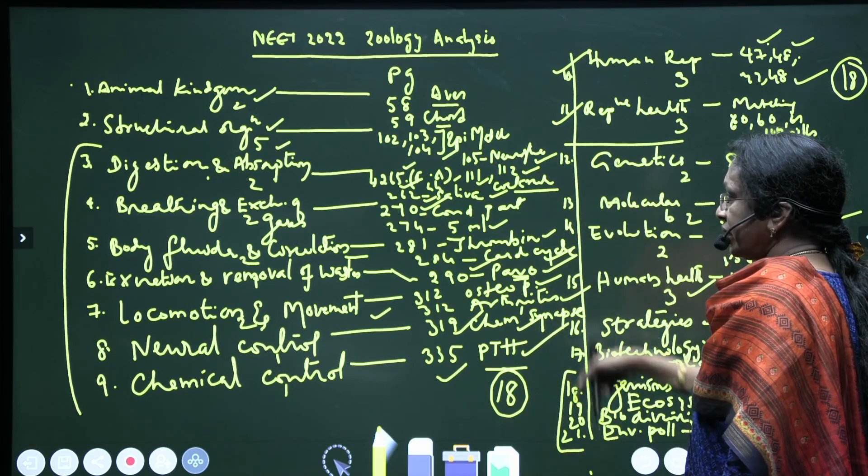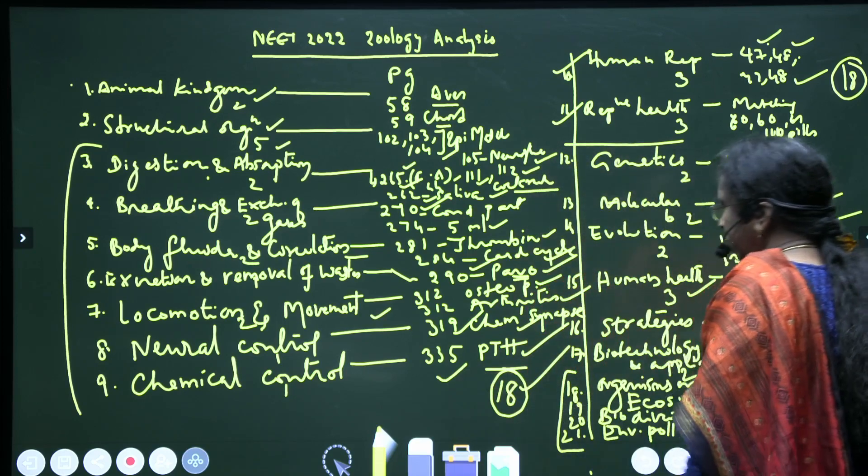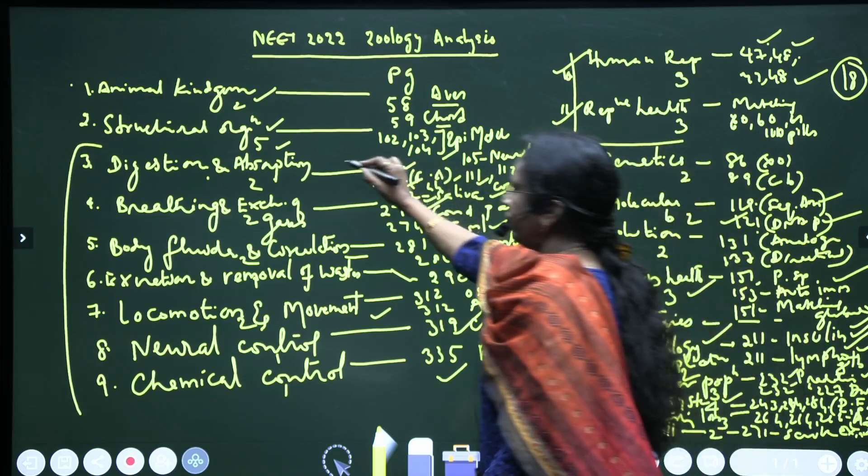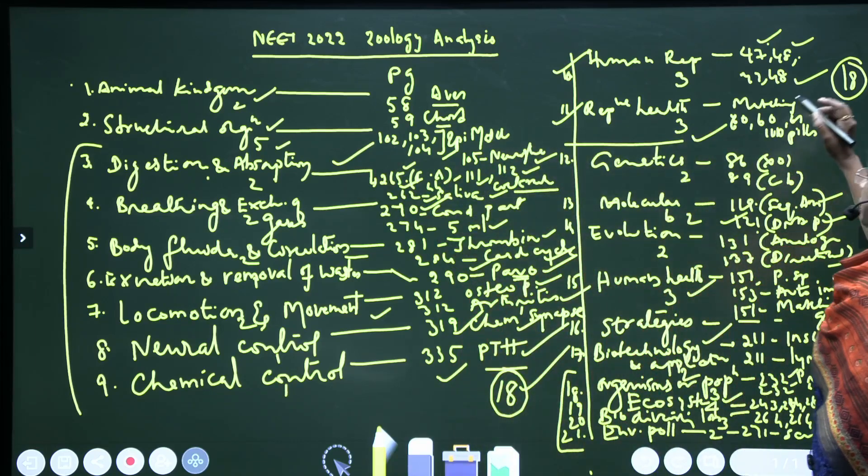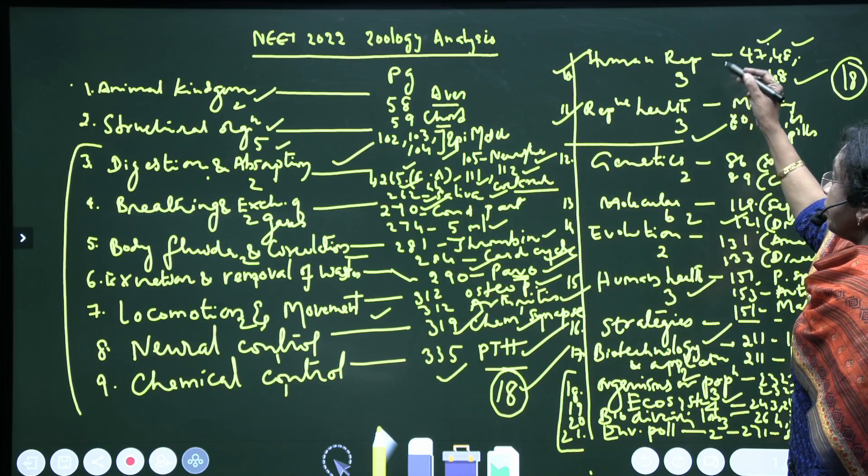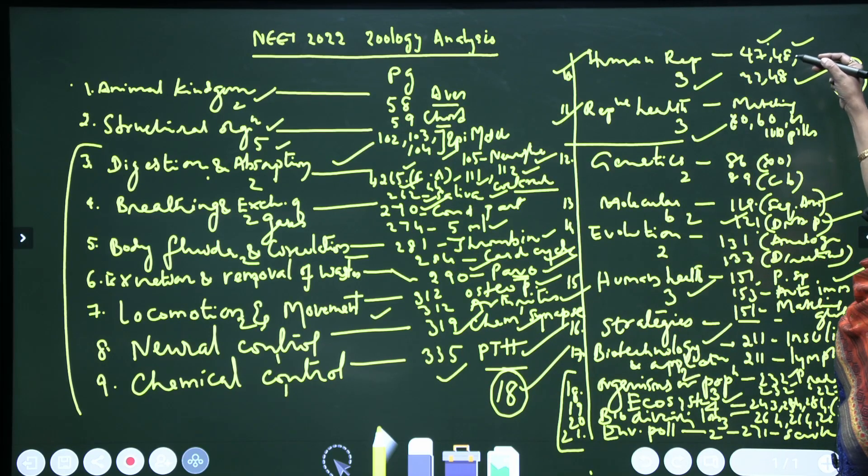So all the 11th standard NCERT, we got 18 questions in total. Coming to human physiology starting from digestion and absorption till reproductive health, from the human reproductive system, three questions are given from pages 47-48 itself.